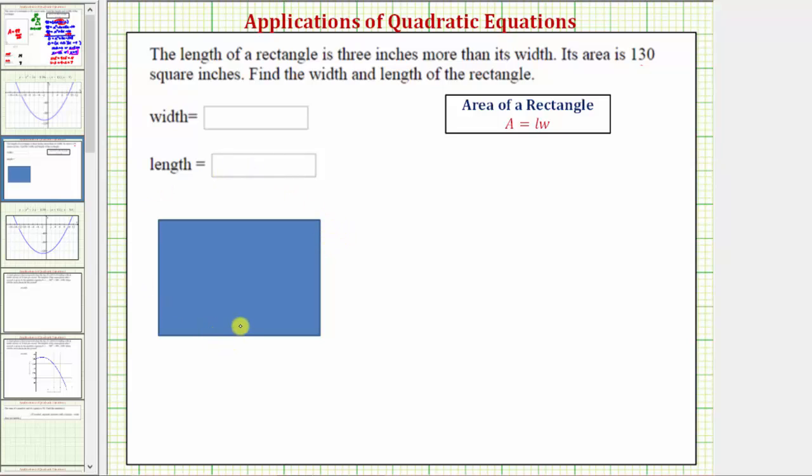So using this rectangle here, because the length is the longer side and is three inches more than the width, we'll let the width be equal to x, and therefore the length would be equal to x plus three. We also know the area is equal to 130 square inches.